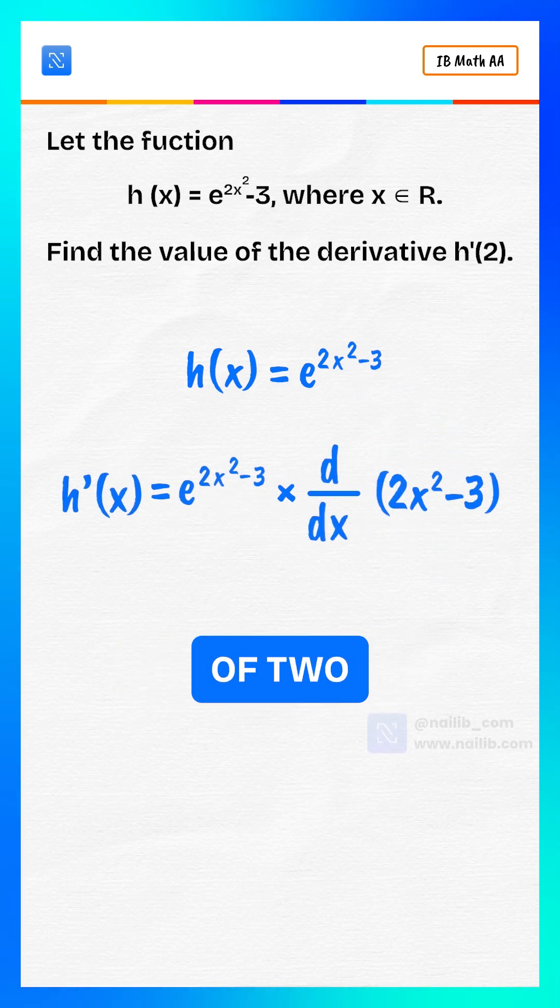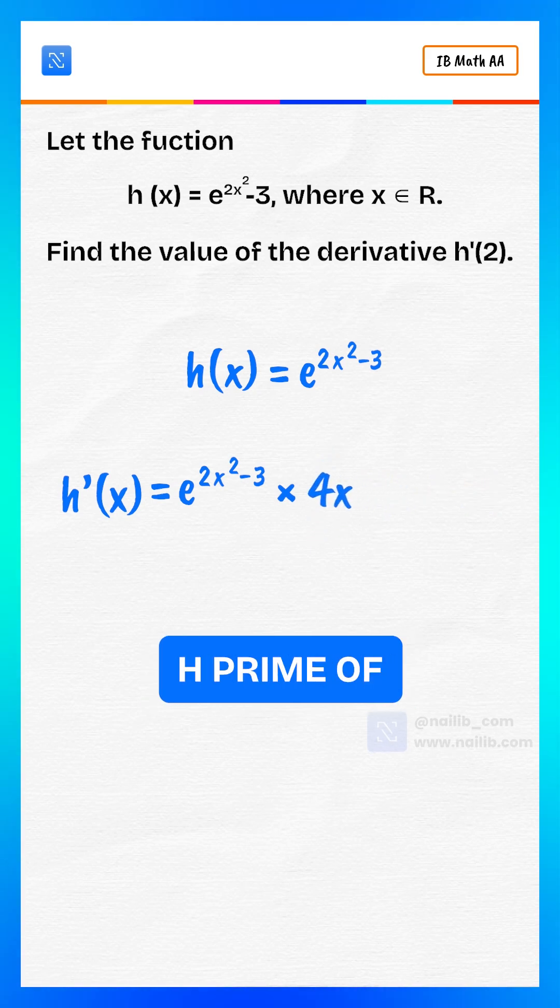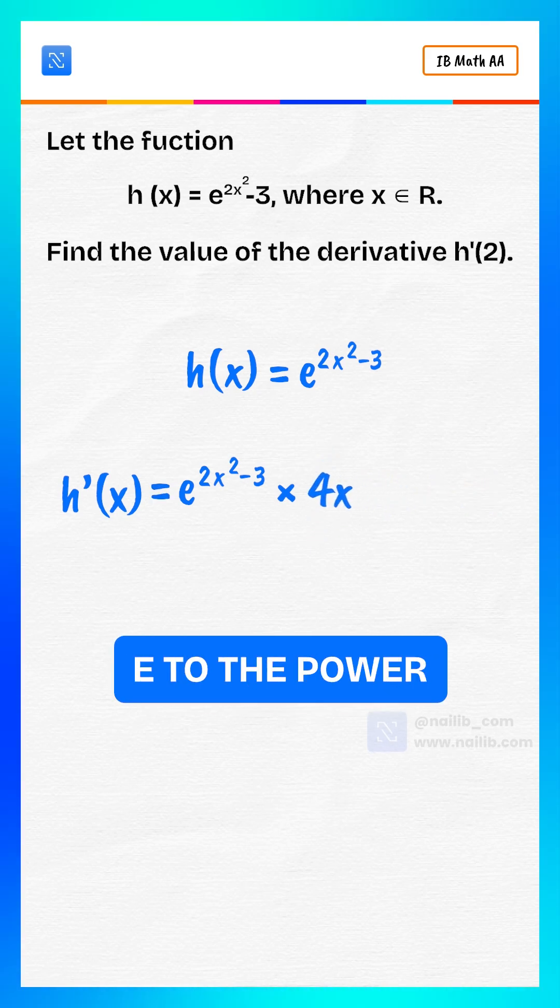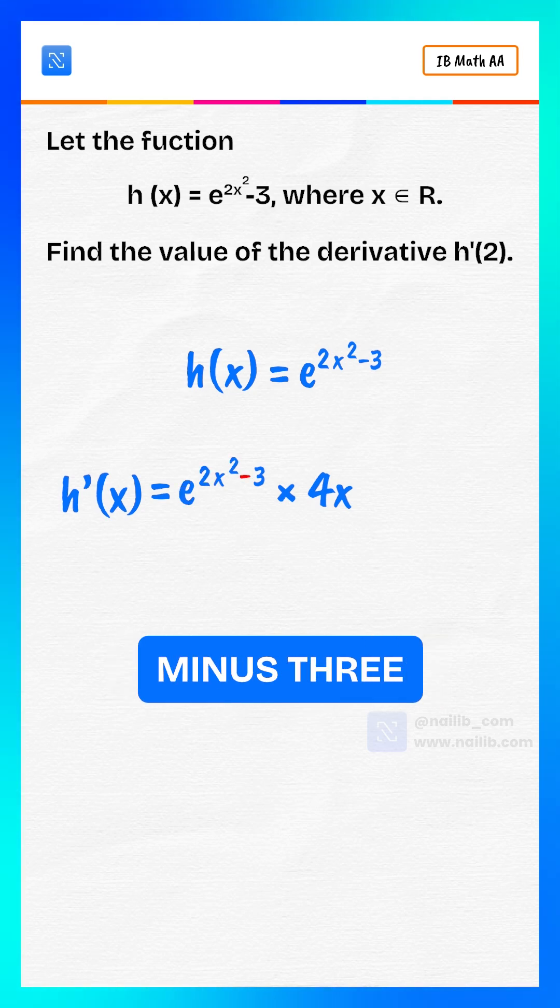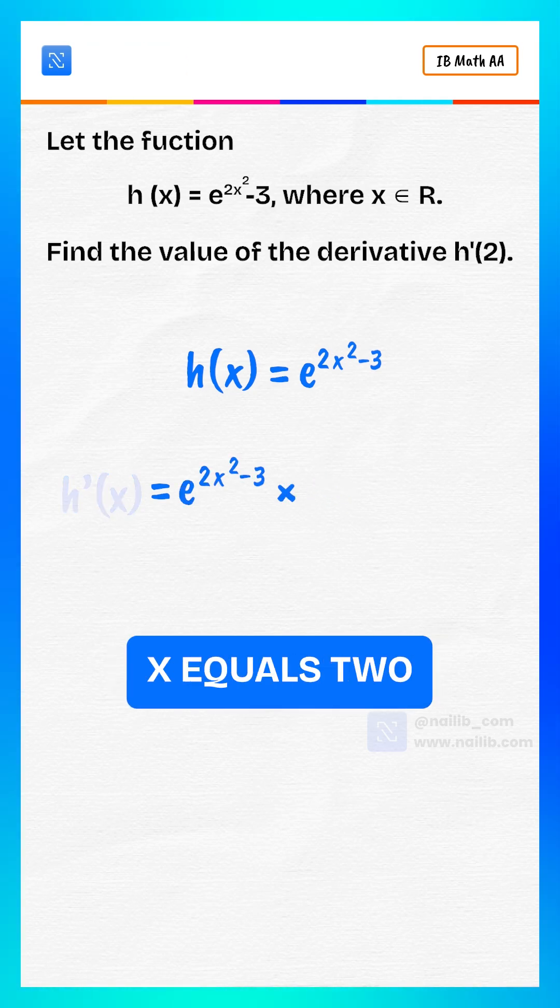Here, the derivative of 2x squared minus 3 is 4x. So, h prime of x equals e to the power of 2x squared minus 3 multiplied by 4x. Now plug in x equals 2.